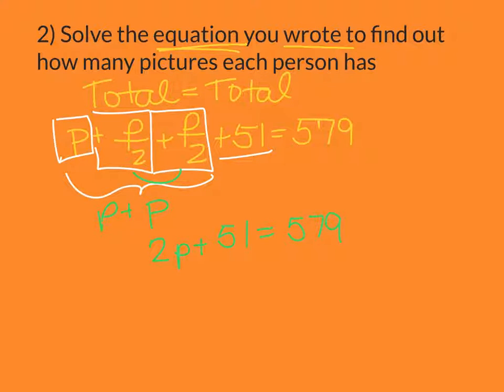We've got a simple two-step equation. The opposite of plus 51 is minus 51, both sides, to keep it balanced. These two are going to cancel. I'm left with 2P equals 579 minus 51. Well, 9 minus 1 is 8. 57 minus 5 is 2. So that's going to be 528.